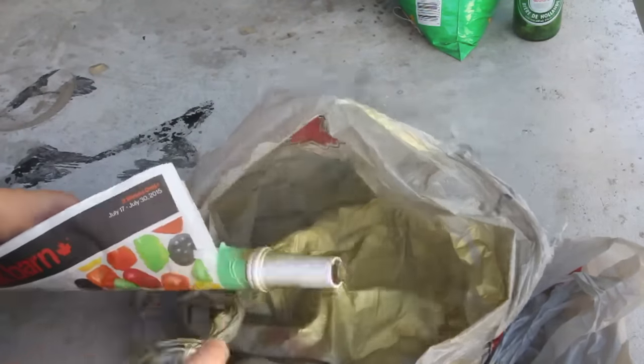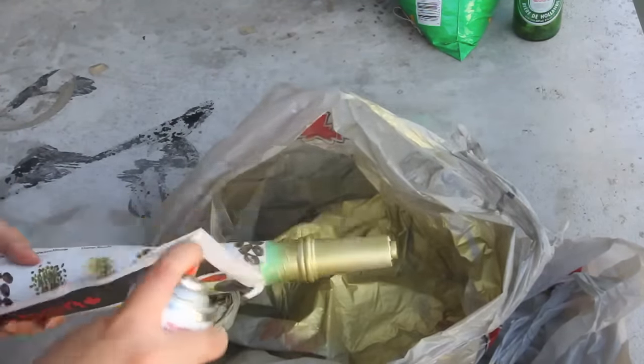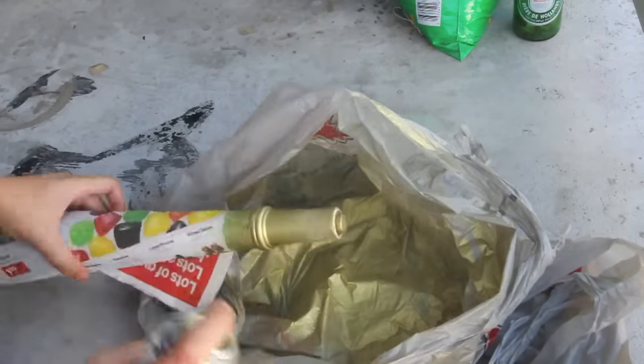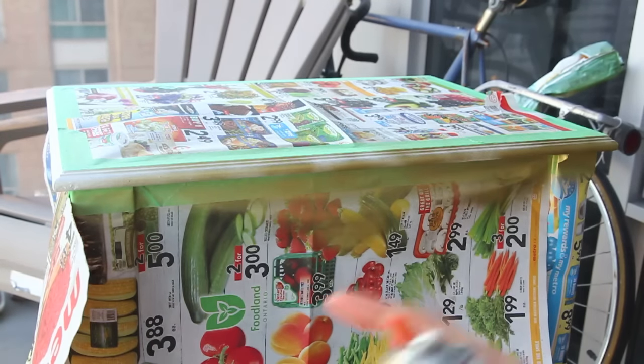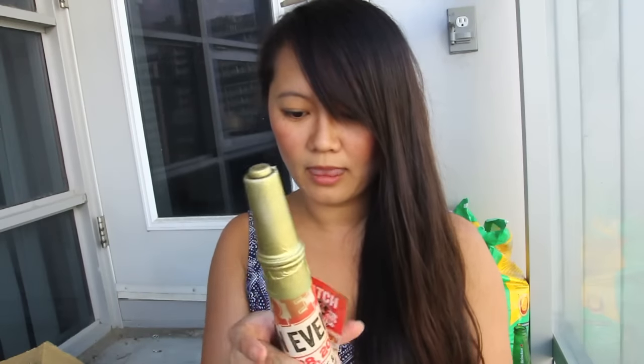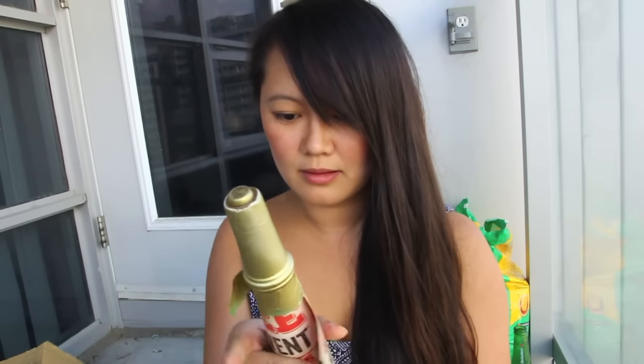Now with the spray paint you want to do very thin light layers. If you do a very thick layer you're going to get drips in your paint. Now let your spray paint dry and then you can remove the painting tape.